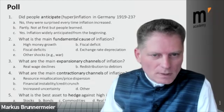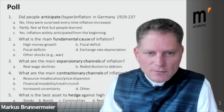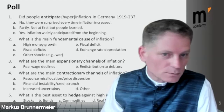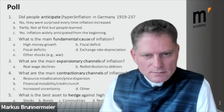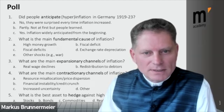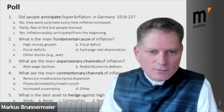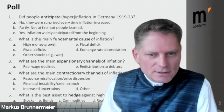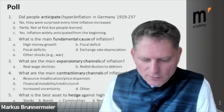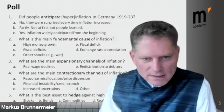The third question asked about the main expansionary channels of inflation: was it declining real wages due to wage stickiness, or redistribution to debtor status? Answers came in at 58 percent versus 43 percent. The fourth question asked about the main contractionary channels: resource misallocation and price dispersion came in at 31 percent, financial instability and credit crunch at 35 percent, and increased uncertainty at 27 percent.